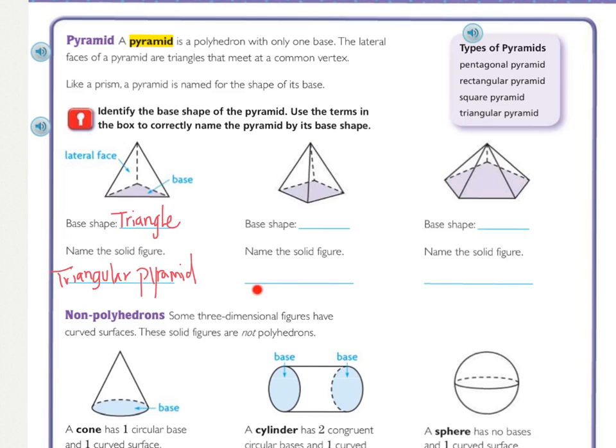The second pyramid, what's the base shape? The base shape is a square, and so that means that it is a square pyramid. Square in and of itself can be the noun or an adjective, so that one doesn't change. But the base shape of this next one has five sides. So that is a pentagon, meaning that that pyramid is a pentagonal pyramid.